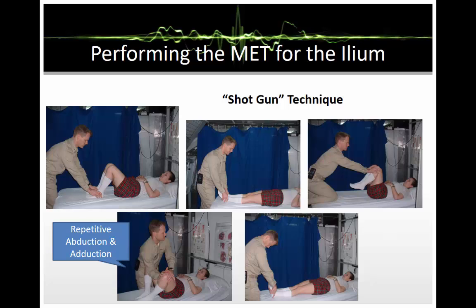This is the shotgun technique. First, the patient is placed in a hook-lying position. The legs are both extended and the medial malleoli are examined to determine which leg appears longer. The legs are then pushed into the chest and brought back out. The patient is placed again in a hook-lying position and performs repetitive adduction and abduction in isometric fashion for five to ten seconds. We then pull the legs back out straight to reevaluate the medial malleoli to see if a shift has occurred.